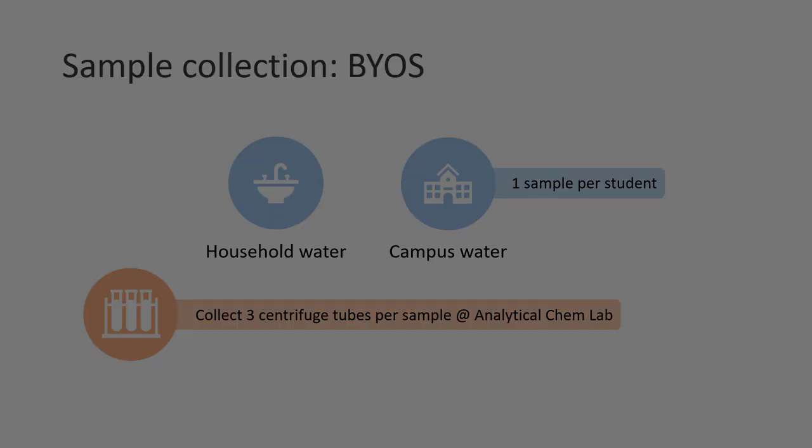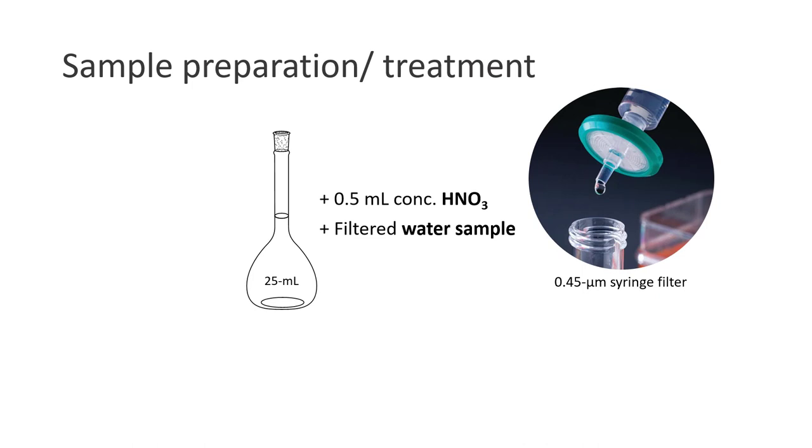For sample preparation, we need to preserve and treat our water sample with nitric acid, and we'll be using a syringe filter to remove any solids from our samples. So why do we use nitric acid in this case, why not hydrochloric acid? Let's discuss about it in the lab.